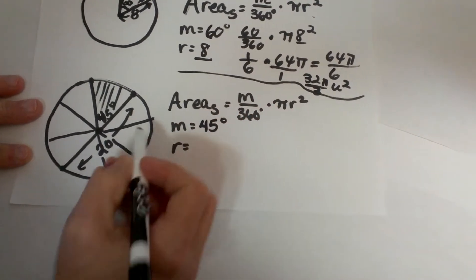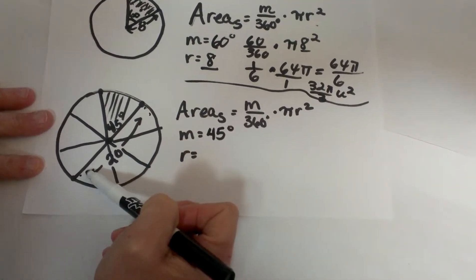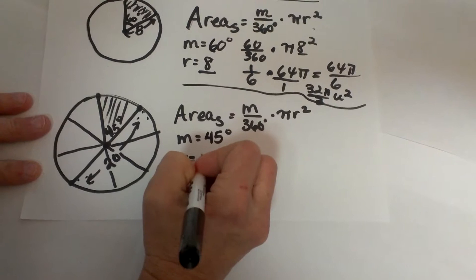And then my radius, well I am not given my radius I am given my diameter. I know my diameter is 20 so my radius is half of that so it must be 10.